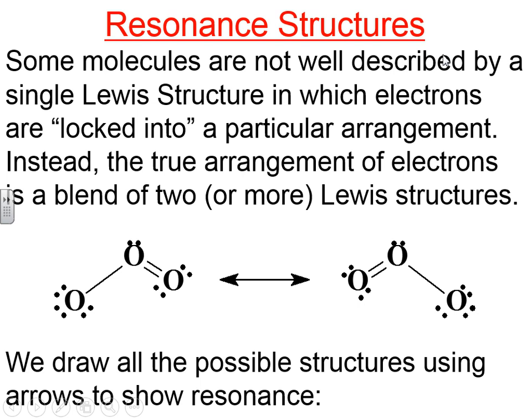This is Unit 3, Video 5. In this video, we will talk about resonance structures. It turns out that some molecules are not well described by just one Lewis structure because the true arrangement shows the electrons that are not locked in, but the electrons are allowed to move between a few bonds. And so the true structure will be a blend.